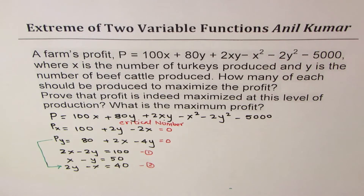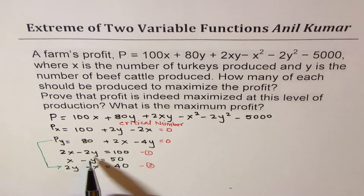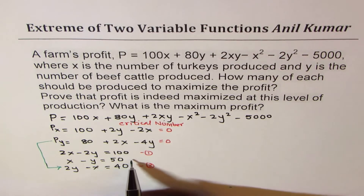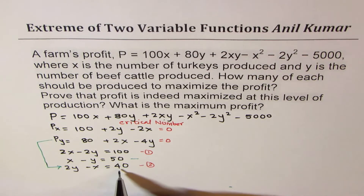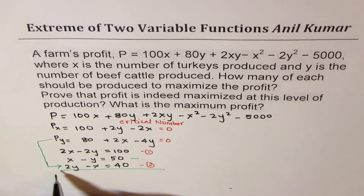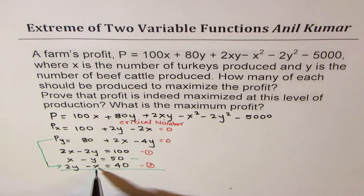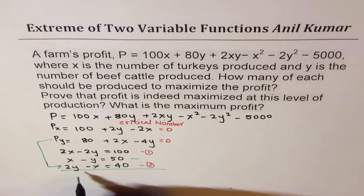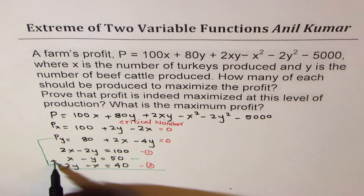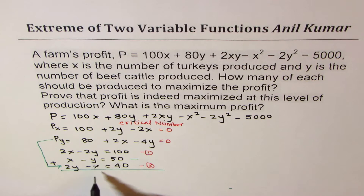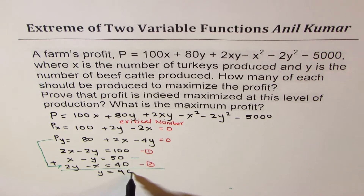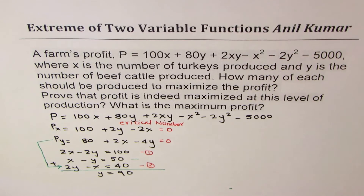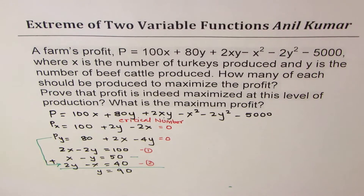So we get these two equations. To solve them, I could add these two equations. If I add equation 1 and equation 2, the x terms cancel and we get 2y minus y, which is y equals 90. So y equals 90 is the critical number.